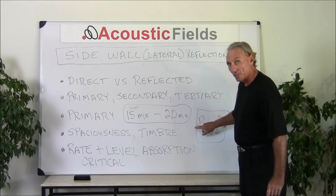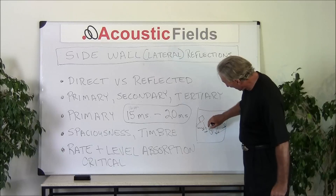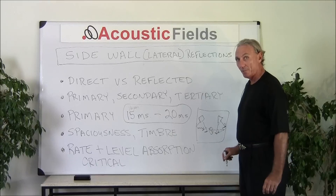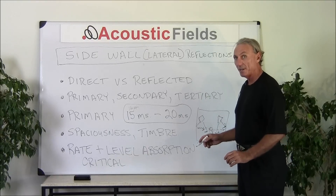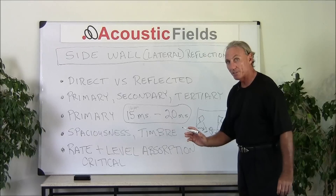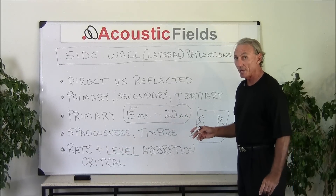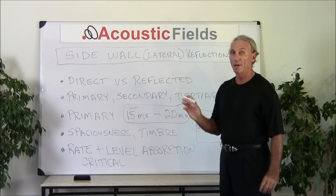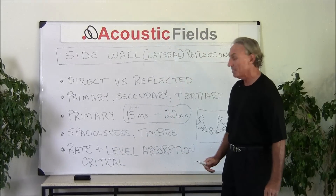We have the primary reflection that hits the sidewall, then it travels all the way across the room and hits the other sidewall — then it becomes secondary. It strikes that wall and moves back towards the listening position, giving us a tertiary, or third, reflection. Those three reflections are very critical and contain the spaciousness and the timbre.